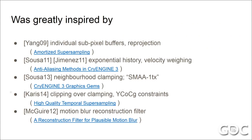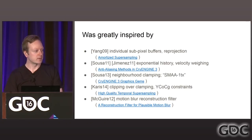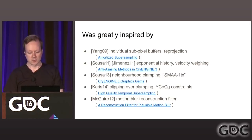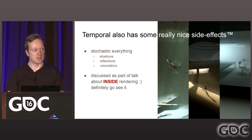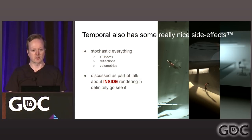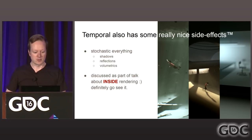This implementation is greatly inspired by the work of Yang, Sousa, Jimenez, Karis, Maguire, and everything put online and in other people's presentations — I hugely appreciate this. My slides will also be available. Temporal anti-aliasing has some really nice side effects — it's great at sucking up noise from stochastic effects, so shadows, reflections, and volumetrics all benefit greatly. We have a lot of these effects in INSIDE that are standing on top of temporal AA being great, and these are discussed in detail in a talk about INSIDE's rendering in a couple of hours by two of my colleagues — definitely go see that.